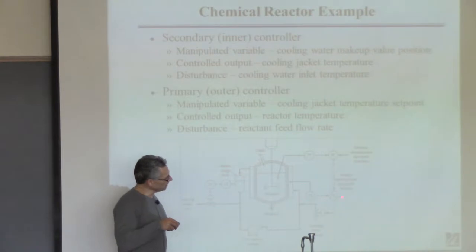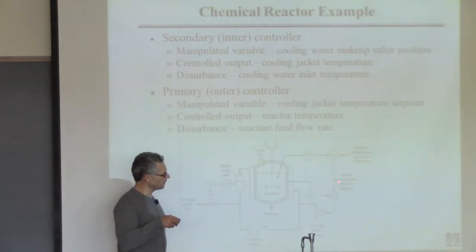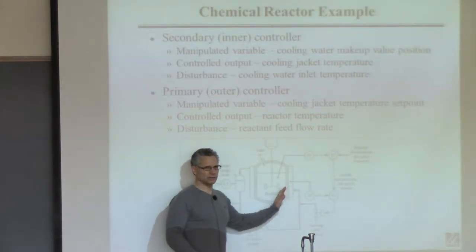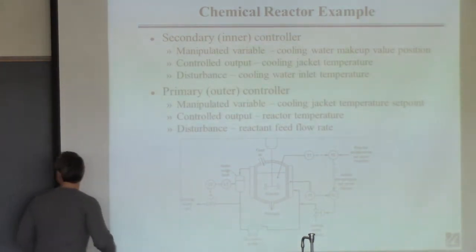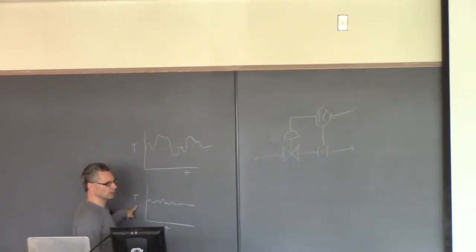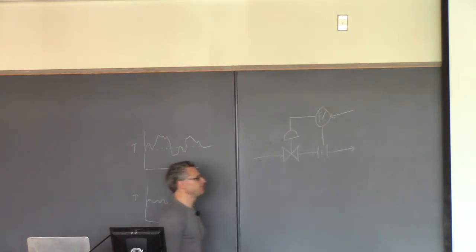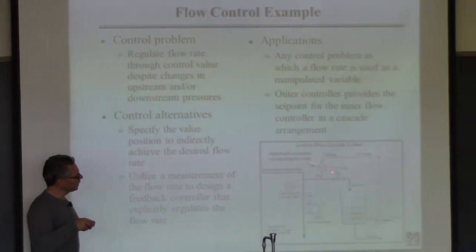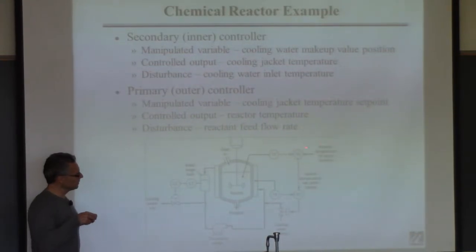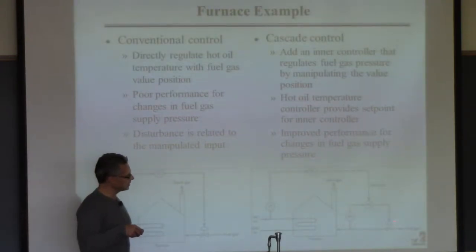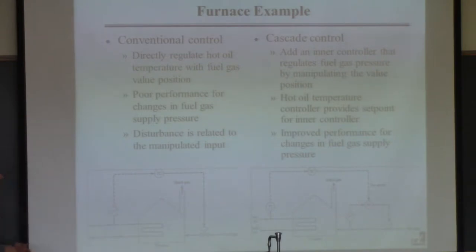So if this controller works to keep the temperature the same, and then this controller changes the target temperature — the set point — if this changes you'll see it much more quickly there and you can compensate for it right away. It'll reduce variability. And again, this one over here was a level-to-flow cascade, this one is a temperature-to-flow cascade, and the other one is essentially another temperature-to-flow cascade because I consider pressure of a gas to be the flow of the gas. So there are always valves and flows.